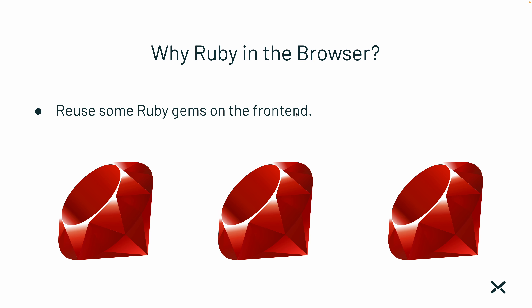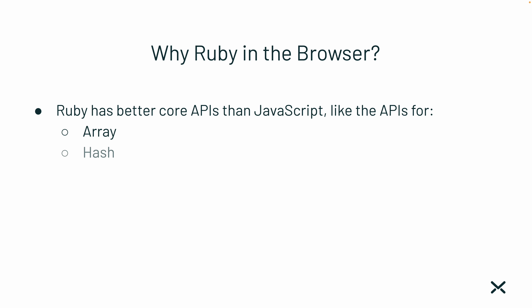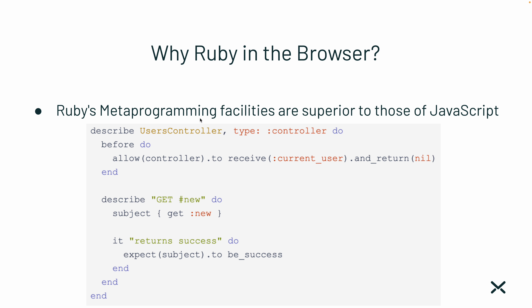You can also reuse some Ruby gems on the front end — I've actually been able to use several Ruby gems on the front end, so you could do that with Ruby in the browser. Ruby also has better core APIs than JavaScript, like the APIs for Array, Hash, Enumerable, String, and Symbol — they're nicer than JavaScript APIs. Ruby's metaprogramming facilities are superior to JavaScript's — you can have nice DSLs like the RSpec DSL for describing an application: before, subject, it does this, it returns success. Things like that are only possible in Ruby.